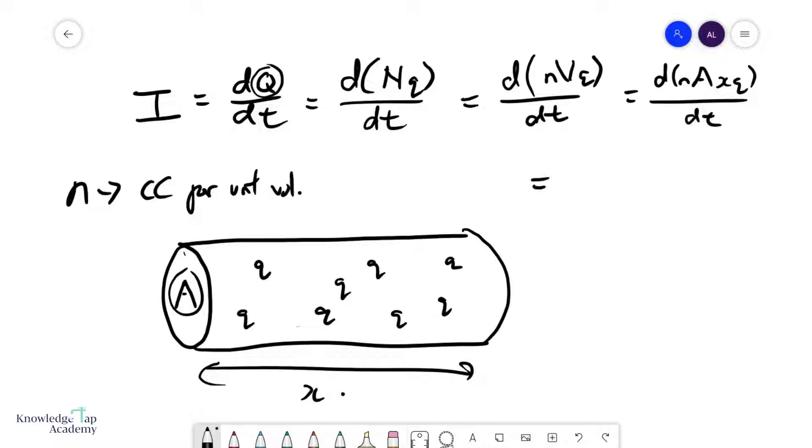And so, what's going to happen now? N is a constant, A is a constant, q is a constant. We're left with dx/dt. And dx/dt, you may remember, is velocity. But we call this v-drift, vd, or the drift velocity.